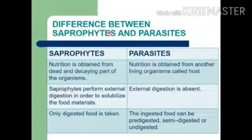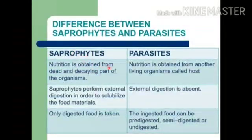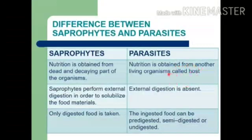Saprophytes: nutrition is obtained from dead and decaying parts of organisms. By the name only you can understand — 'sapro' means rotten, 'phytes' means plant. So saprophytes obtain their nutrition from dead and decaying parts of organisms. But in parasites, nutrition is obtained from another living organism called the host. 'Para' means others, 'sites' means food — food from others.